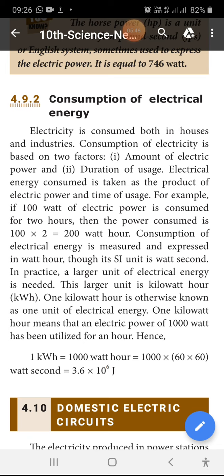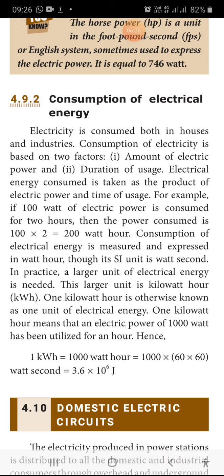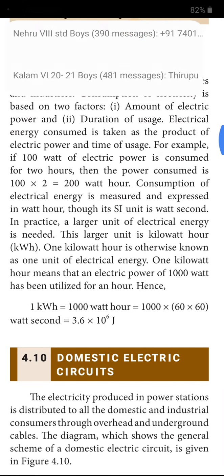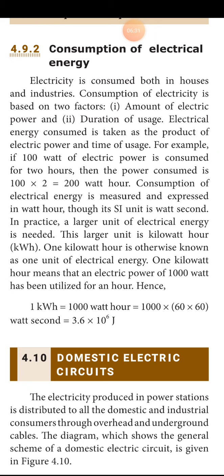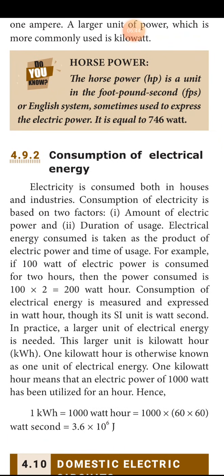In such a way, electrical energy consumption is calculated by the electrical board. Consumption of electrical energy is measured and expressed in kilowatt-hours; its SI unit is watt-second. In practice, a large unit of electrical energy is needed — this large unit is kilowatt-hour, otherwise known as one unit. One kilowatt-hour means the electric power of 1000 watts has been utilized in one hour. Hence one kilowatt-hour equals 1000 into 60 into 60 seconds, which is 3.6 × 10⁶ joules. Up to this the lesson is over; revise, write, and send it to me. Thank you.